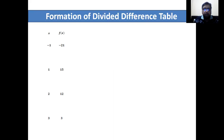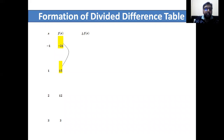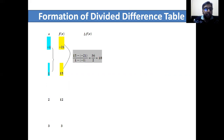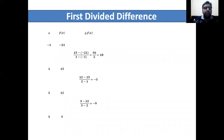The first topic is the formation of the divided difference table. Arrange the x values and function values column-wise. To find the first divided difference, we take the first two function values, minus 21 and 15: that is 15 minus (minus 21) divided by 1 minus (minus 1), which gives 36 by 2, equal to 18. Similarly, we find the other first divided difference values: 12 minus 15 divided by 2 minus 1, and 3 minus 12 divided by 3 minus 2.